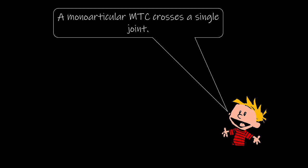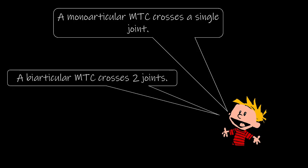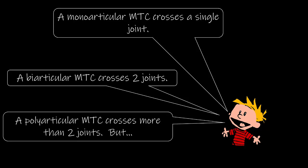Now let's examine what happens with biarticular MTCs. First, some nomenclature. A monoarticular MTC crosses a single joint — an example would be the vastus lateralis, which just crosses the knee. A biarticular MTC crosses two joints — an example would be the hamstrings, which cross both the knee and the hip. A polyarticular MTC crosses three or more joints — an example would be the biceps brachii, which crosses the shoulder, elbow, and proximal radial ulnar joints.